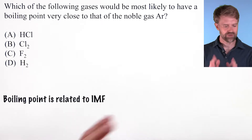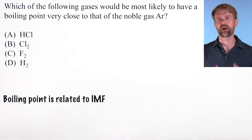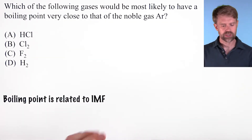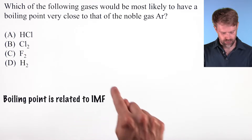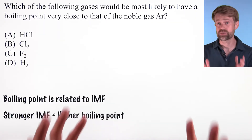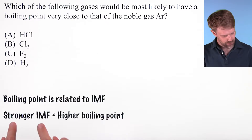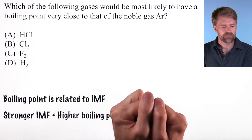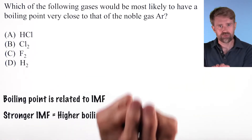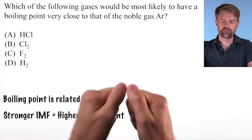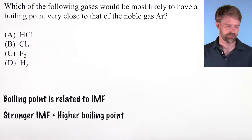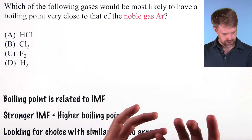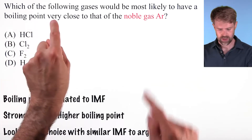Whenever the AP exam gives you formulas and asks you about boiling point, melting point, or other phase-related data, the question is usually asking about intermolecular forces, or IMF. The main point: in general, the stronger the intermolecular forces between particles, the higher the boiling point. That's because particles with stronger attractive forces take more energy to pull apart, so they boil at higher temperatures. This problem asks us to select a choice that has a boiling point very close to that of argon.